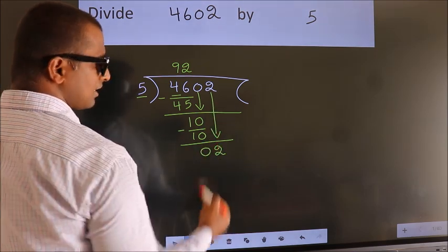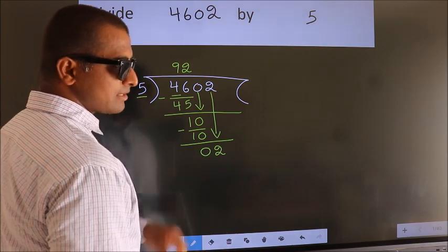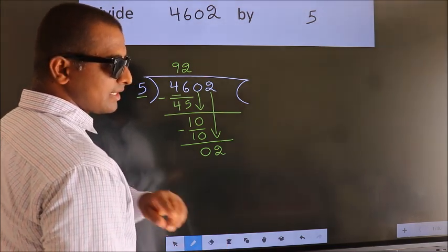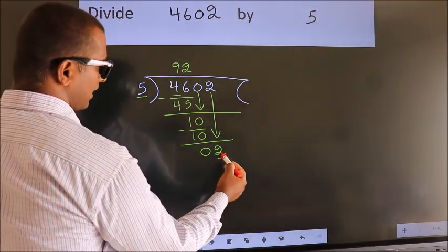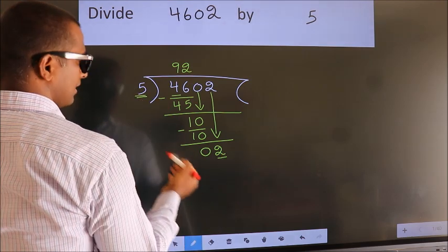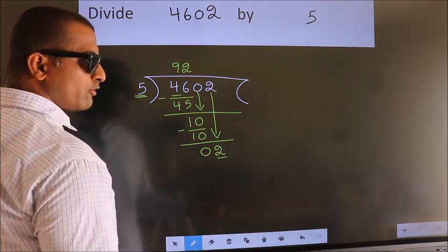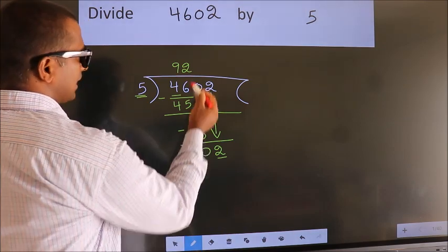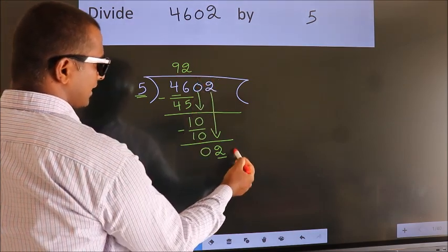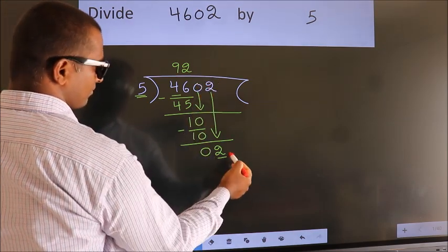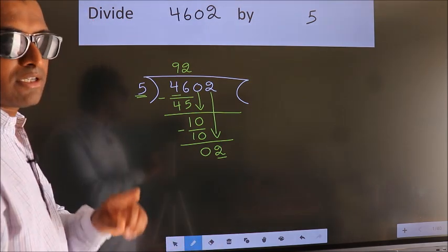After this step, the mistake happens. And the mistake is this. Here we have 2, here 5. 2 smaller than 5. So, what many do is they directly put dot, take 0. Which is wrong.